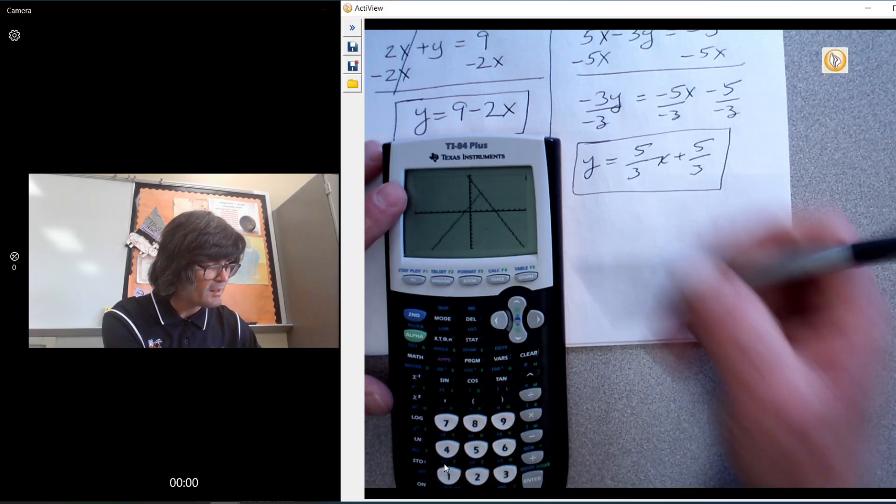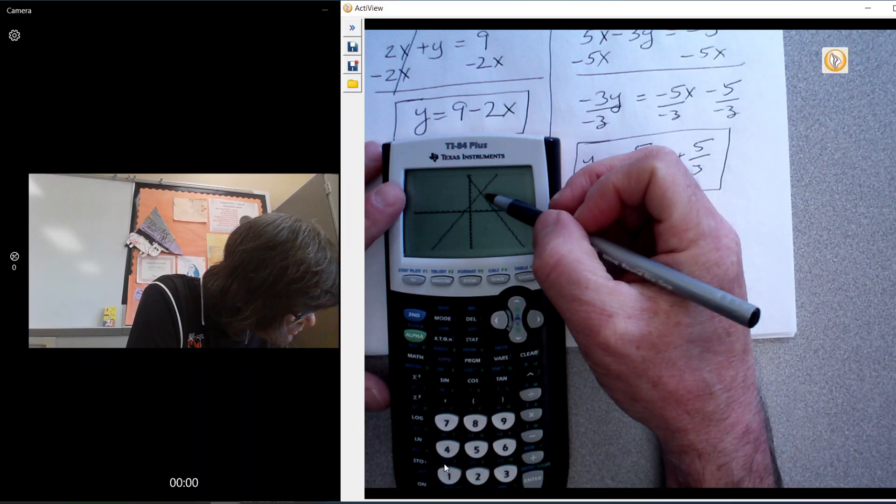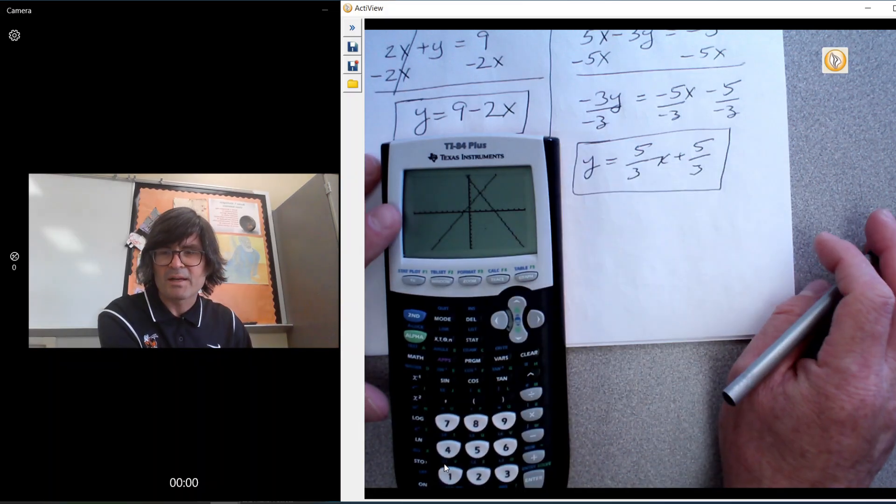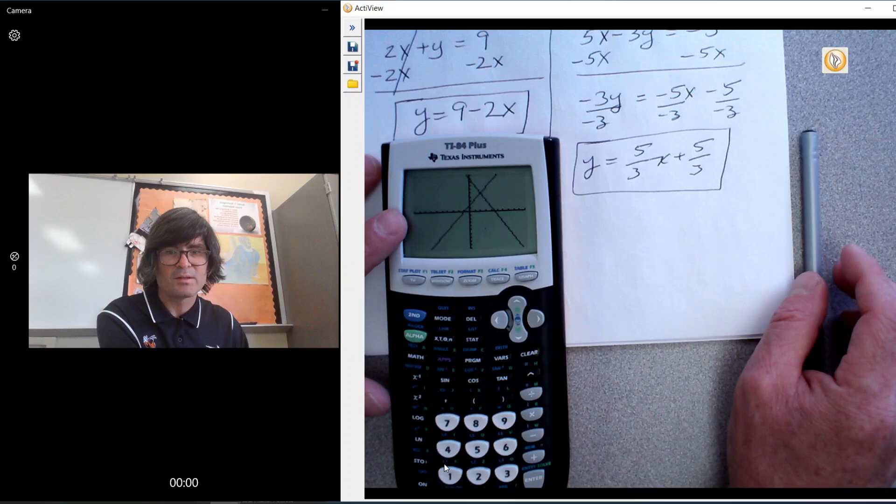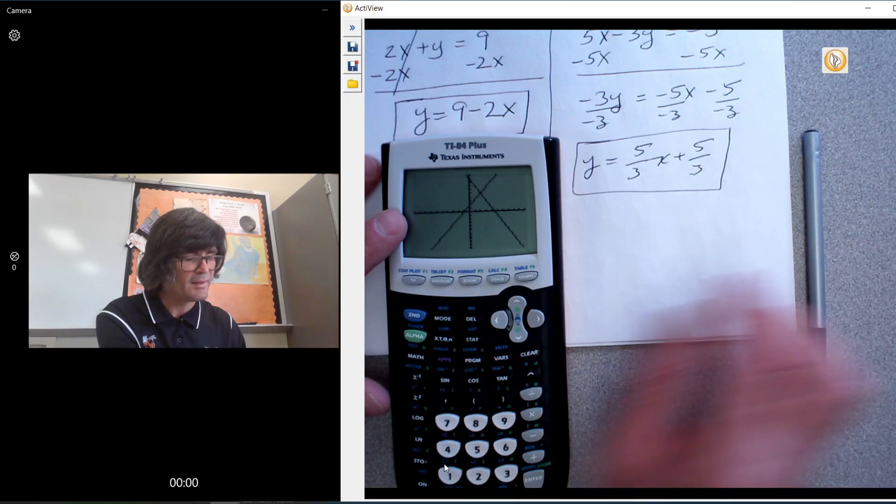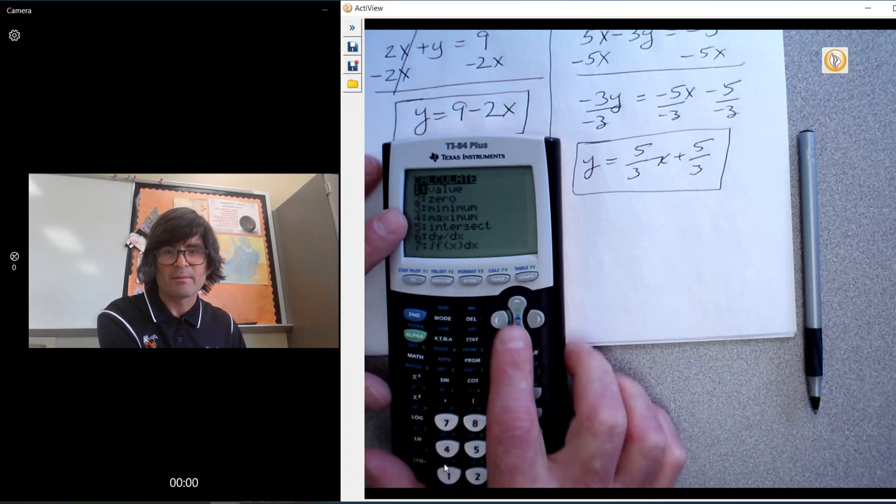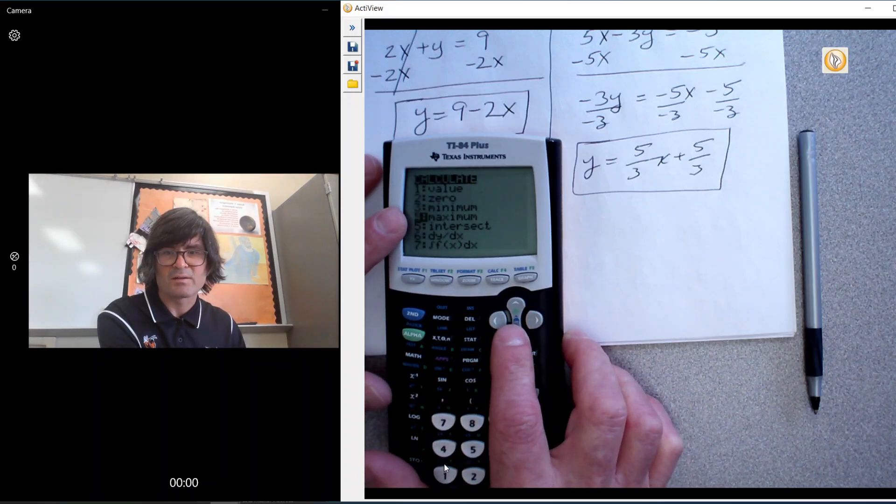I'm now looking for this point right here where they cross each other. It looks to be about two something. You can try to eyeball it or make the calculator find it itself. I'm going to do that in the calc menu. Second calc. We're going to pick option 5, which is intersect.